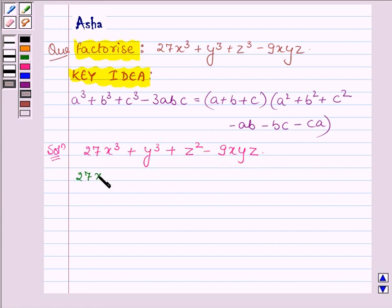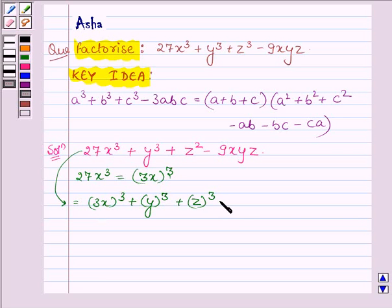Now, 27x cube can be written as 3x whole cube and thus this can further be written as 3x whole cube plus y whole cube plus z whole cube minus 3 into 3x into y into z.